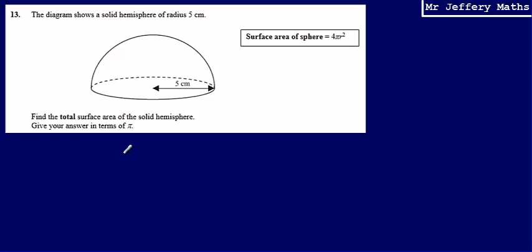This is question 13 from a series of videos taking a look at the Edexcel practice papers. Here we're told that the diagram shows a solid hemisphere of radius 5 centimeters. We're asked to find the total surface area of the solid hemisphere and give your answer in terms of π.